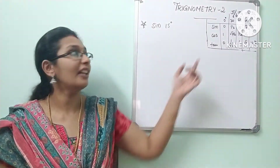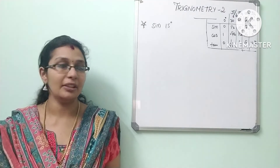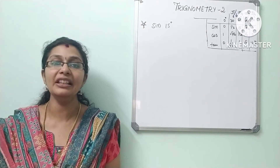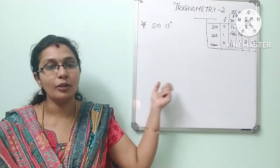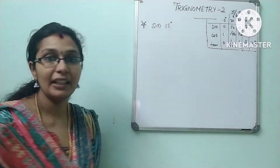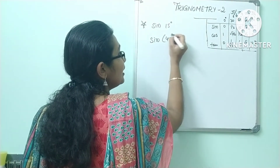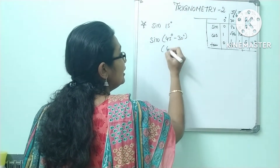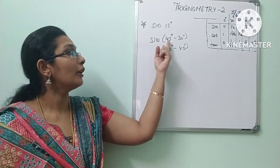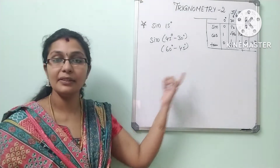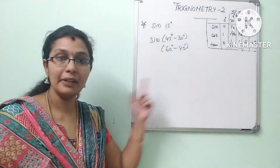Now for question 3, we need to find sin 15°. We cannot use direct values, so we need to express 15° using known angles. We can write 15° as 45° − 30°, or as 60° − 45°. Both give known values. Let's choose 45° − 30°. We can express it in two different ways and choose whichever is convenient.